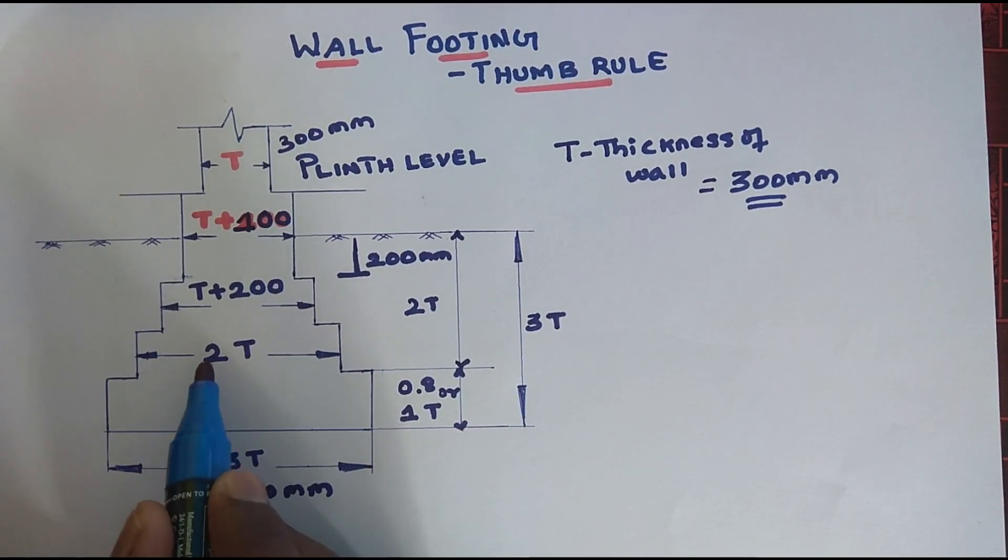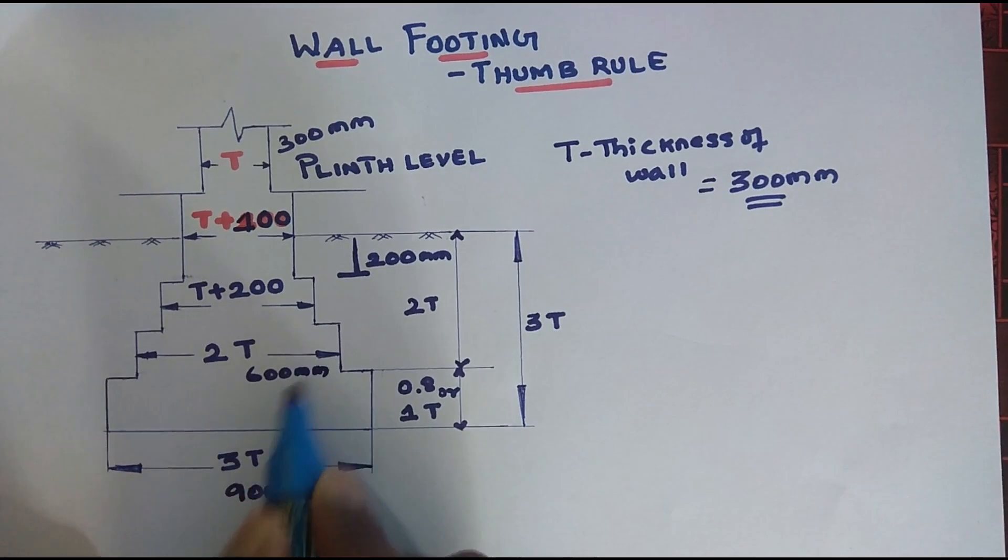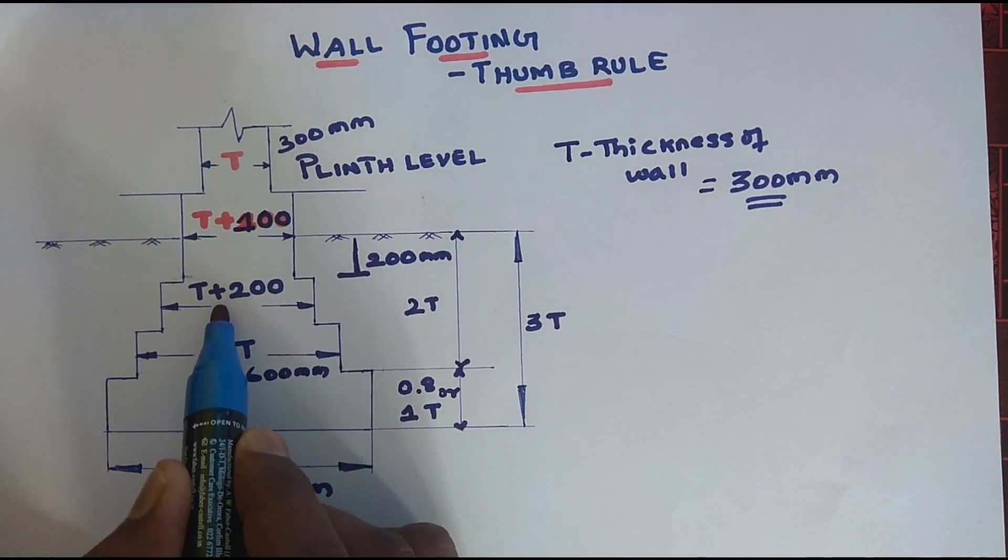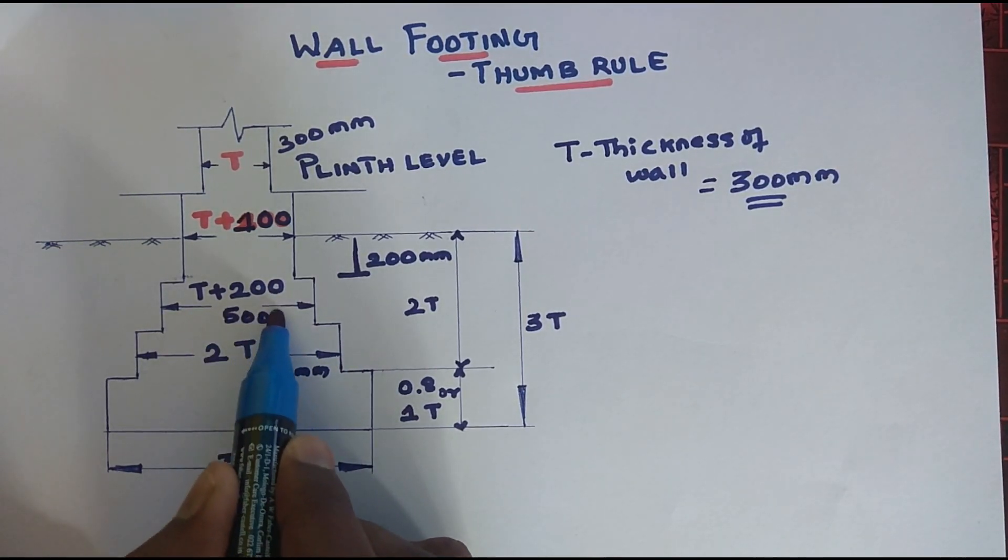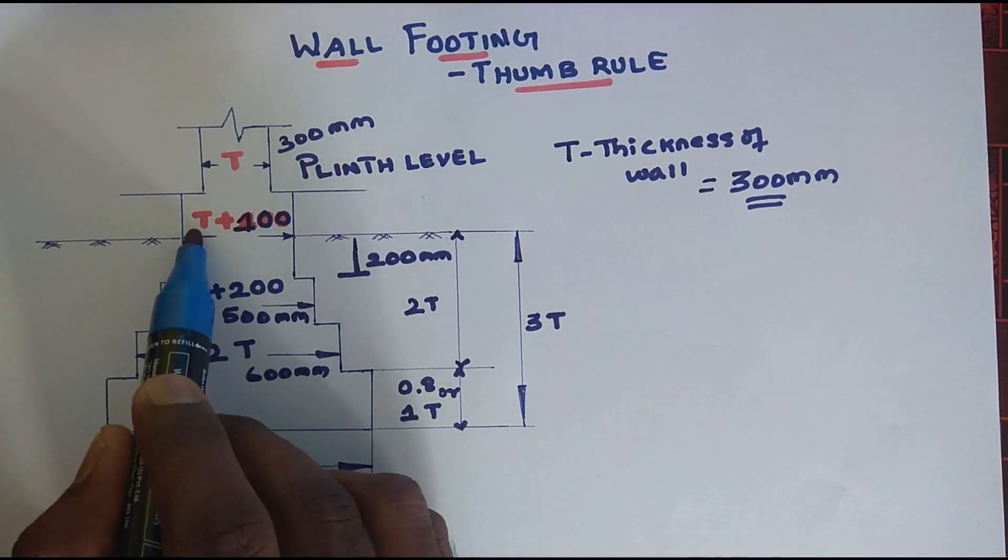2 into 300 is 600mm. T plus 200mm: 300 plus 200 equals 500mm. Next is T plus 100: 300 plus 100 equals 400mm.